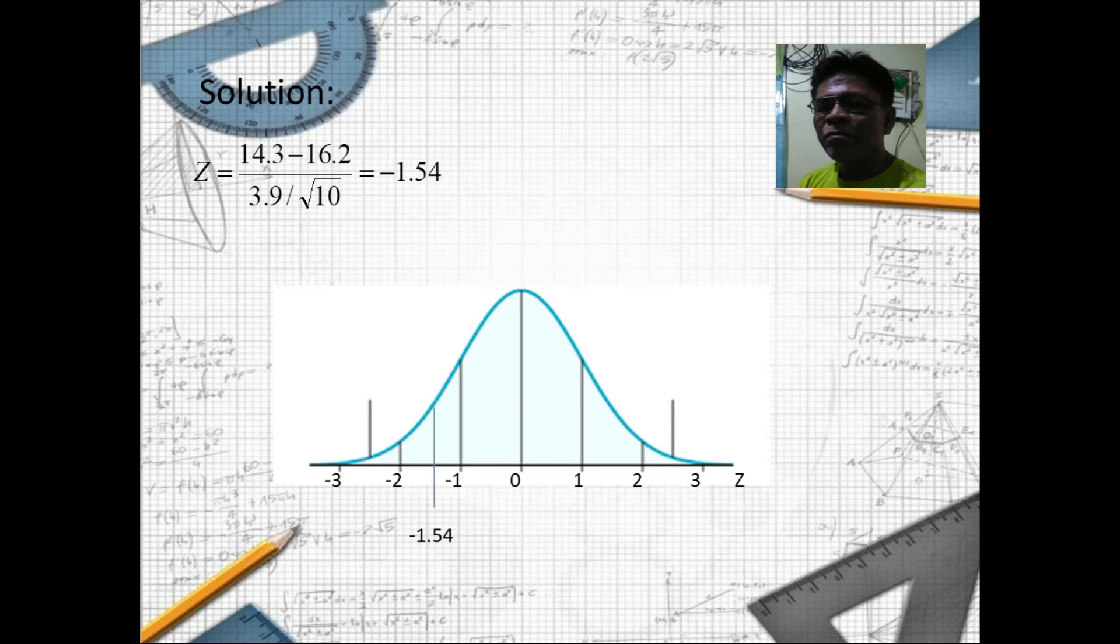That is n, and our z equals negative 1.54. We locate the negative 1.54 in the normal curve.